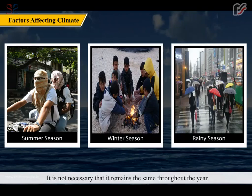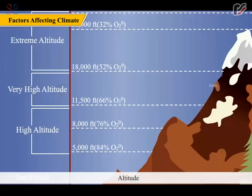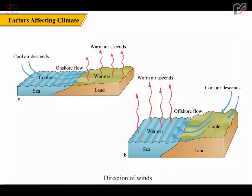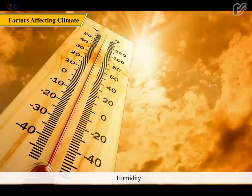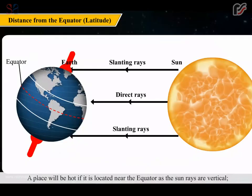It is not necessary that it remains the same throughout. The climate of a place is affected by many factors such as distance from the equator, altitude, distance from the sea, direction of winds, humidity, and ocean currents. A place will be hot if it is located near the equator as the sun rays are vertical.